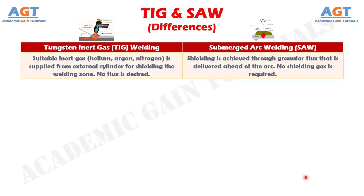Number 7: in TIG welding, a suitable inert gas like helium, argon, or nitrogen is supplied from an external cylinder for shielding the welding zone. No flux is desired, whereas in submerged arc welding, shielding is achieved through granular flux that is delivered ahead of the arc. No shielding gas is required.